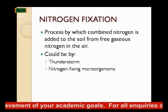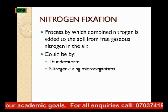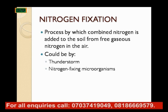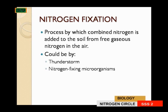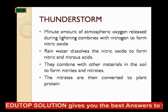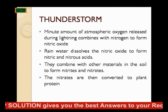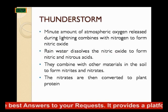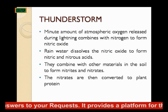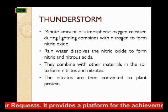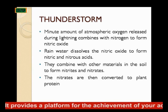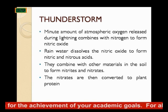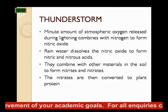Nitrogen fixation is the process by which combined nitrogen is added to the soil from free gaseous nitrogen in the air. Nitrogen fixation could be by thunderstorm or nitrogen-fixing microorganisms. During thunderstorm, minute amounts of atmospheric oxygen released during lightning combine with nitrogen to form nitric oxide. Rainwater dissolves the nitric oxide to form nitric and nitrous acid, which combine with other materials in the soil to form nitrates and nitrites. The nitrates are then converted to plant protein.